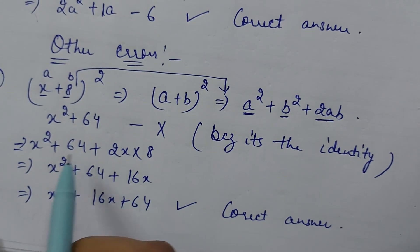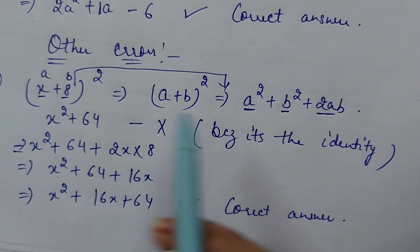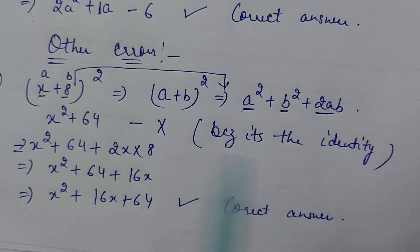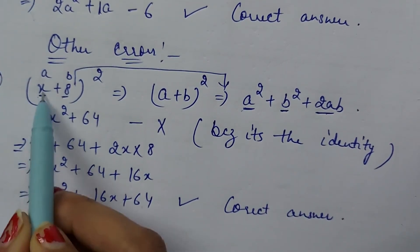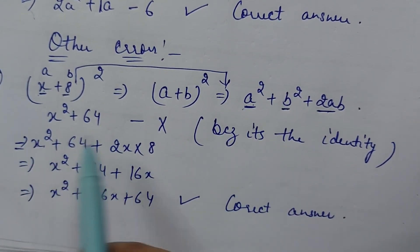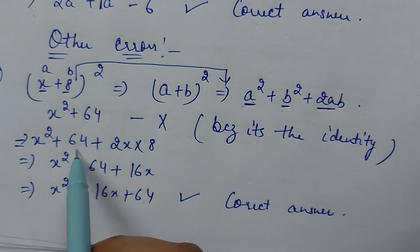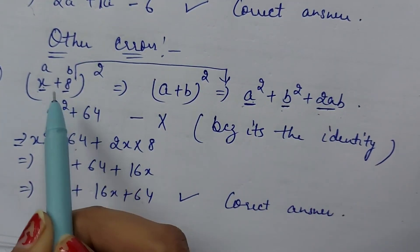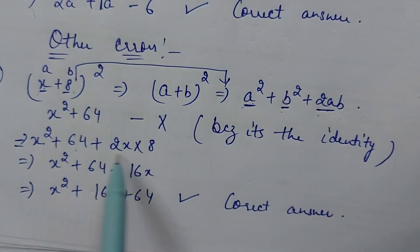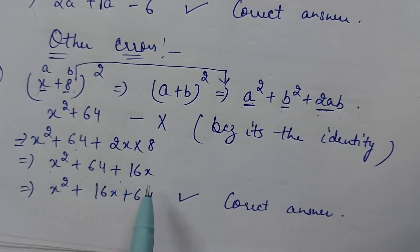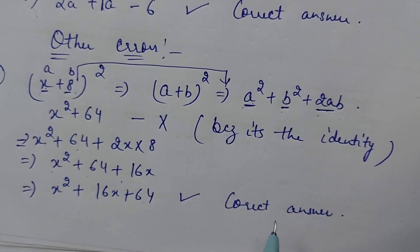Main aapko ek baar phir samjhaoongi. x plus 8 ka whole square ko humne is formula mein apply kiya aur x ka square humne likhe diya a square x square plus b square yani ki 8 ka square plus 2ab, 2x into 8. Yani ki humare paas aagaya x square plus 64 plus 16x. It is the correct answer.